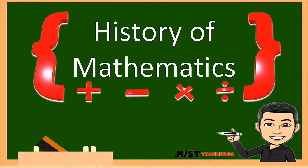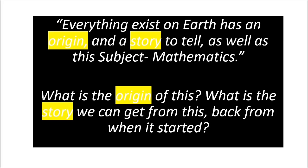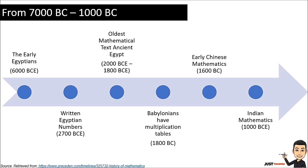Good day everyone. Today we will talk about the history of mathematics. Everything that exists on earth has an origin and a story to tell, as well as this subject — mathematics. What is the origin of mathematics? What is the story we can get from it? We can see here the timeline of mathematics, from 7000 BC up to the present, but now I will show you from 7000 BC to 1000 BC.